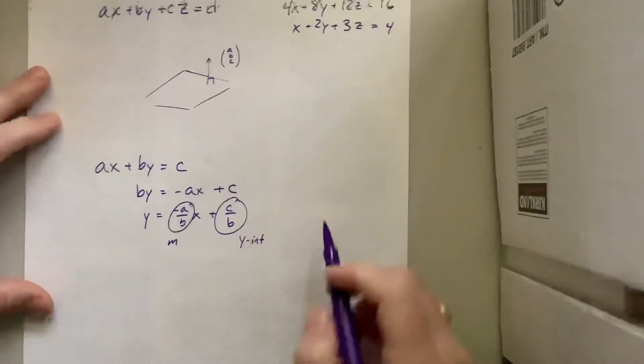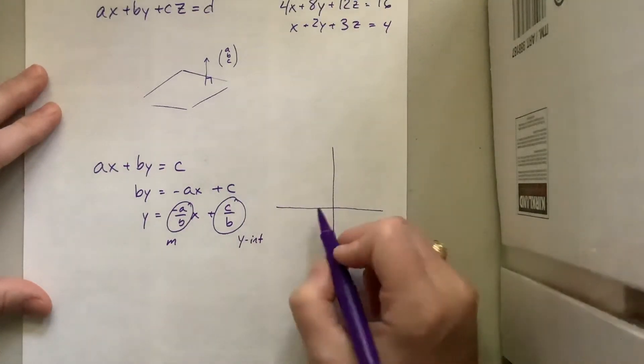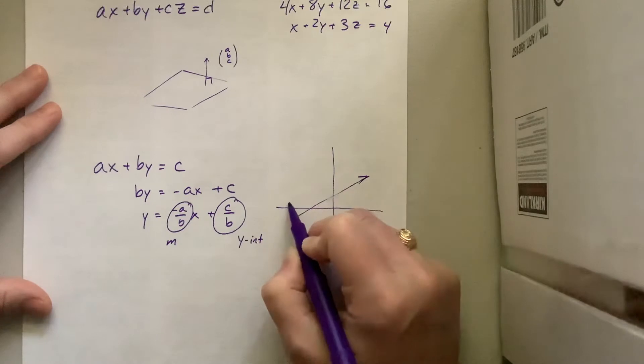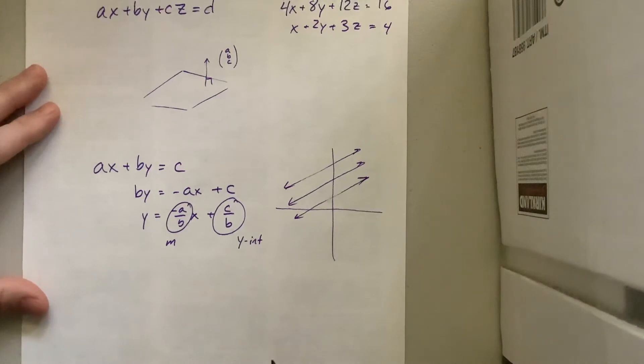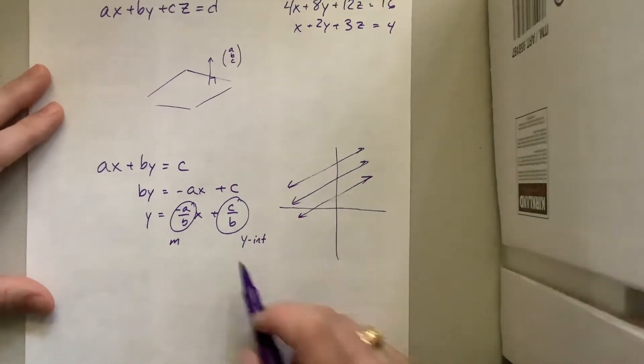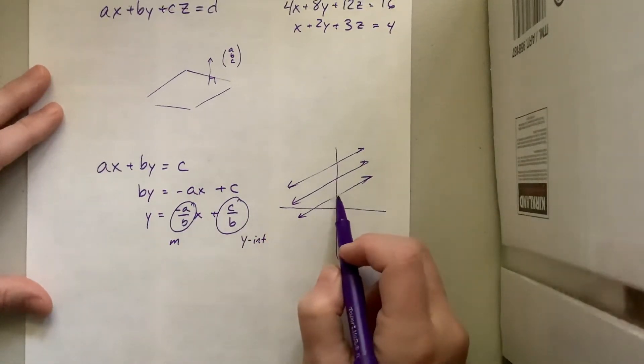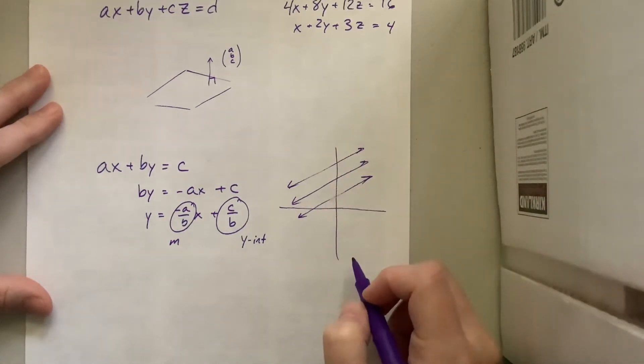So basically, if I'm in two dimensions, I could have a line like this or I could have a line like this or I could have a line like this. What this value does here is it tells me where to begin, where do I cross this y-axis.